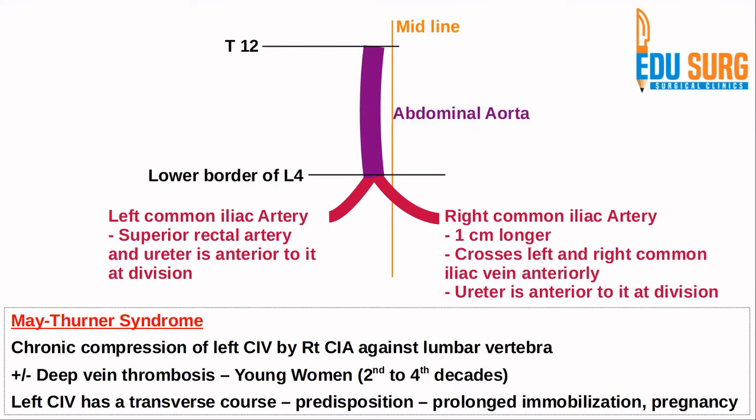Because the right common iliac artery crosses the left and right common iliac vein anteriorly, you can sometimes have chronic compression of the left common iliac vein by the right common iliac artery against the lumbar vertebra. This can predispose to deep vein thrombosis — which may be present or absent — and is a very commonly asked question. This is known as May-Thurner syndrome, commonly seen in young women in the second to fourth decades of life. The left common iliac vein is more commonly involved because of its transverse course, which predisposes it to compression against the lumbar vertebra.